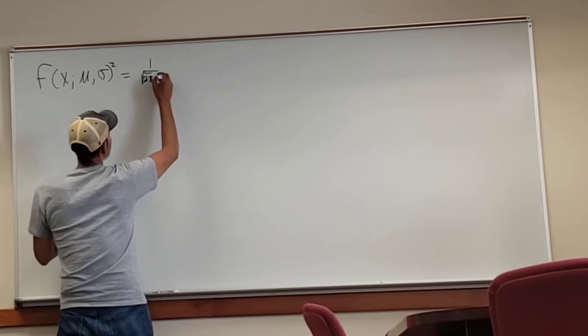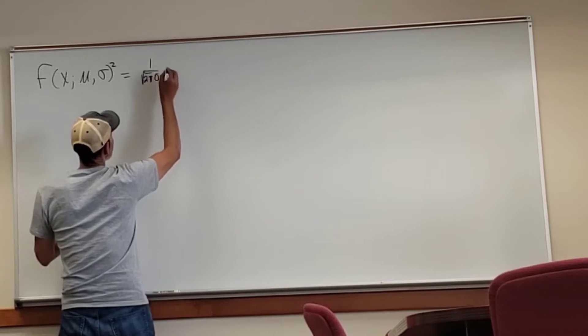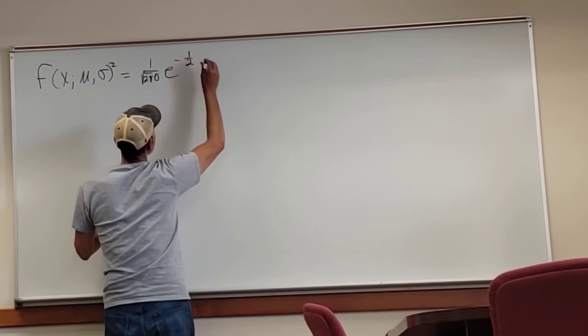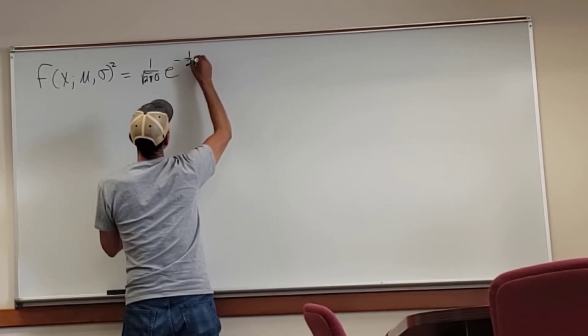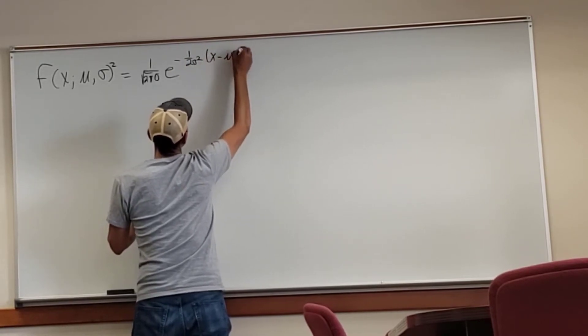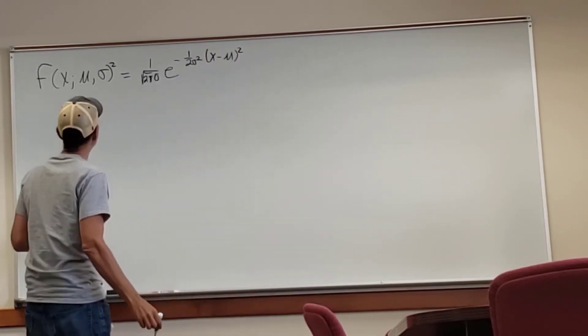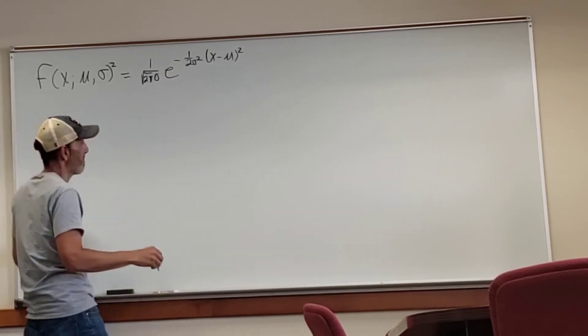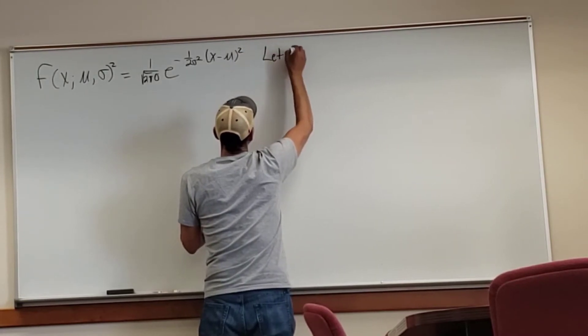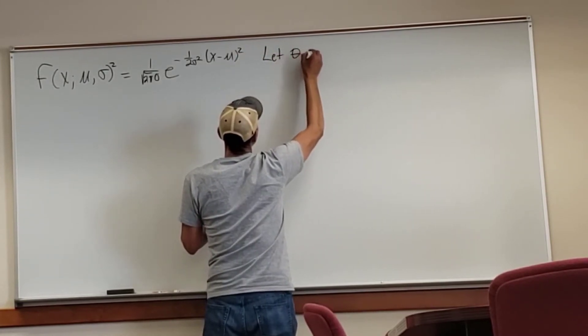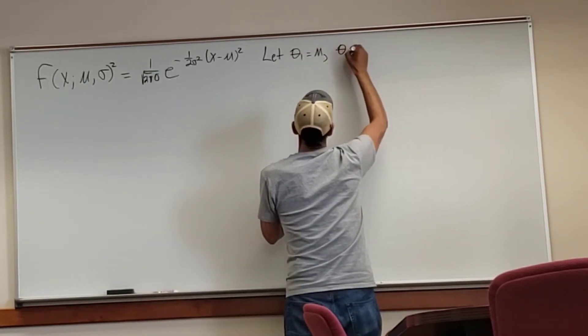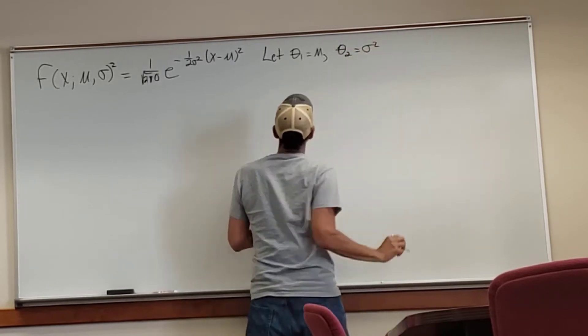So what I'm doing here is writing the probability density function. This is basically the probability distribution function for a continuous random variable. I have other videos where I prove that. So we're going to let theta 1 equal the mean mu, and theta 2 equals sigma squared, which is the variance.